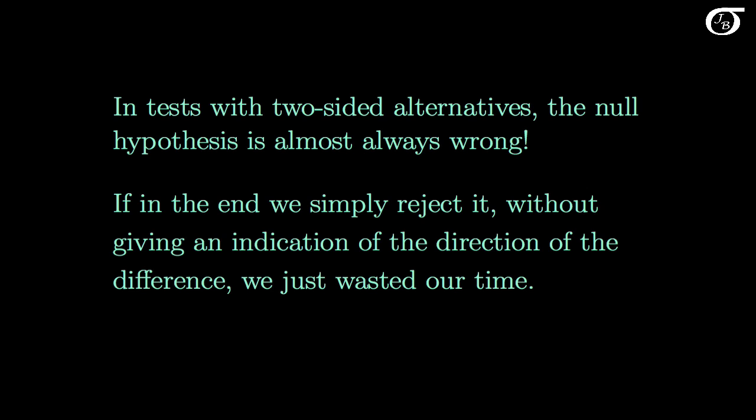In a related note, in tests with two-sided alternatives the null hypothesis is almost always wrong. What are the chances that the five-year survival rates are exactly equal? Not very good, to say the least. So a lot of times, going in, we know the null hypothesis is false, and if in the end we simply reject it without giving an indication of the direction of the difference, we just wasted our time. This is another reason why it can be very informative to report an appropriate confidence interval in addition to the results of the hypothesis test, as the confidence interval can give us an indication of the direction and size of the difference.